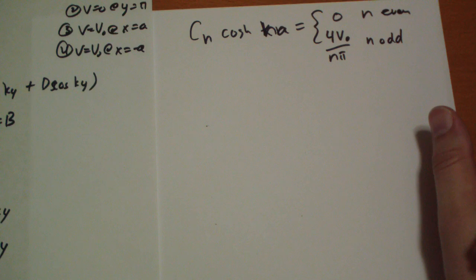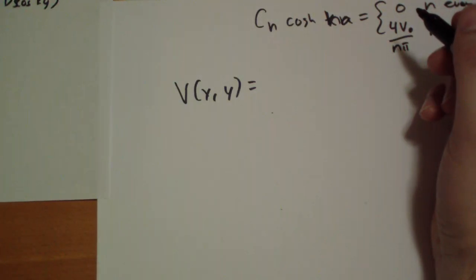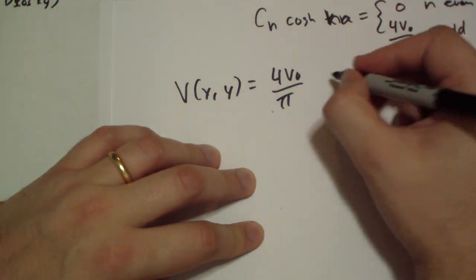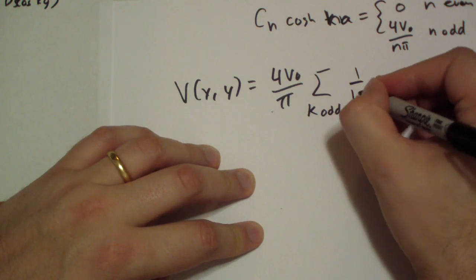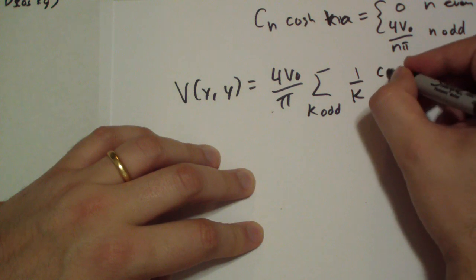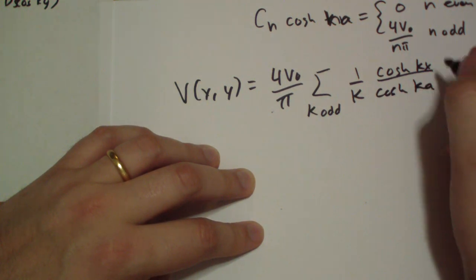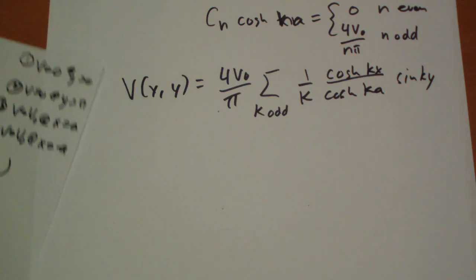And plugging that in, the total potential, plug this all in back into this equation here. We get 4 v-naught over pi. The sum, where k is odd, of 1 over k, cosh kx all over cosh ka, times sine of ky. Okay? And there's a pretty little picture of this in the book, if you want to look at it. Not terribly interesting, but hey, it's there. So, there you go. There's a solution for that problem.